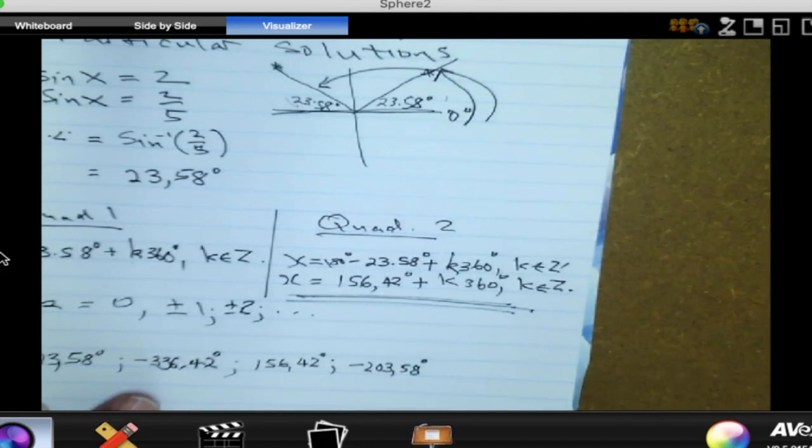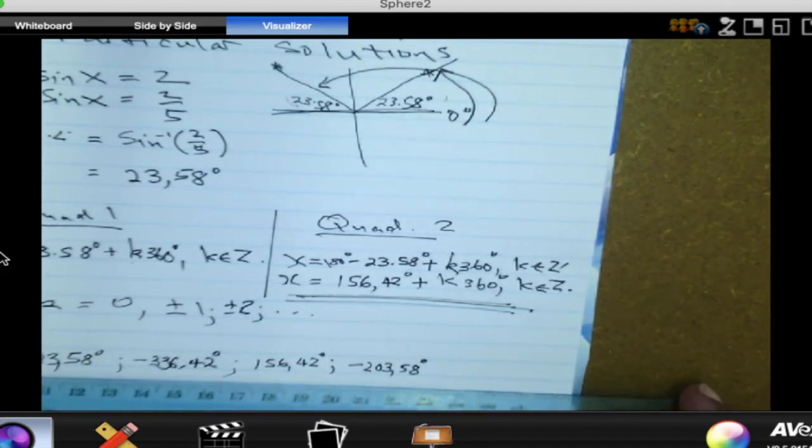K equal to 2? It's too big. K equal to negative 2? Again, it's too big. So we're done then. So these will be the four answers.